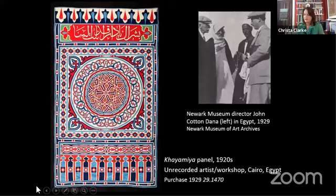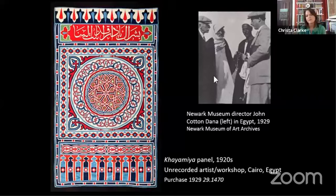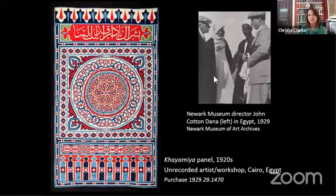One of the wonderful aspects of the Newark Museum's collection is that it embraces the whole African continent and its global diaspora, including works from North Africa — about a fifth of the collection is in fact from North Africa. This is a tent panel made in Cairo, Egypt in the 1920s. It's quite large — almost 10 feet tall — and was collected by the museum's founder, John Cotton Dana, who traveled to Egypt to collect works in the 1920s. It's a work that would have hung to create an architectural structure.